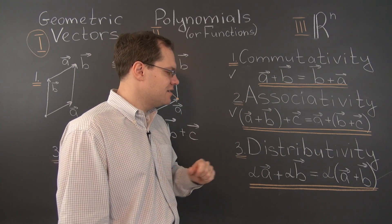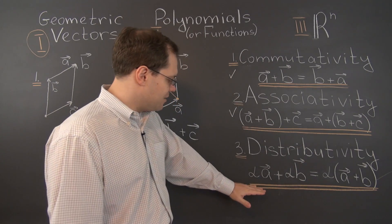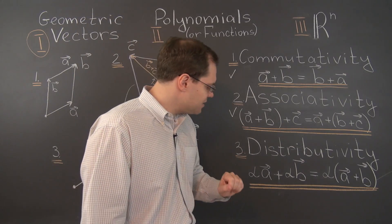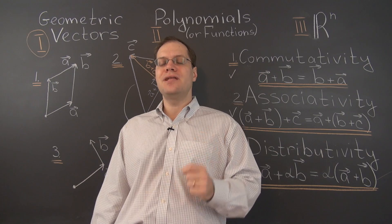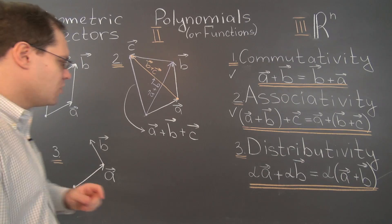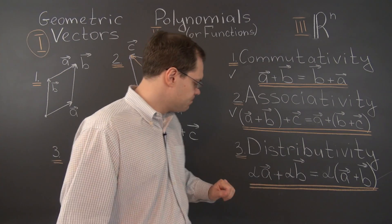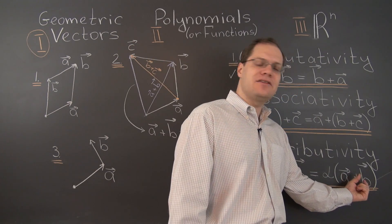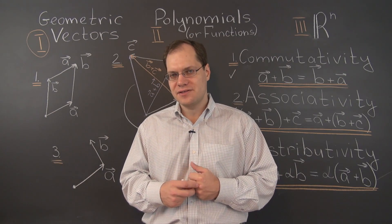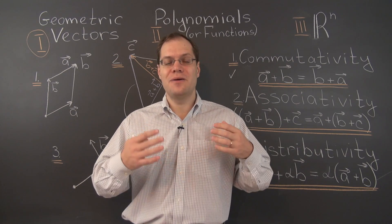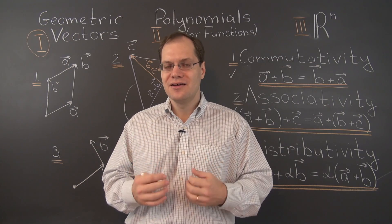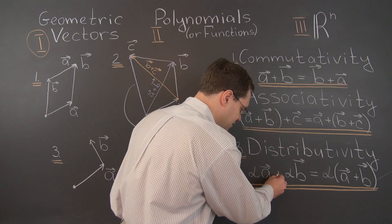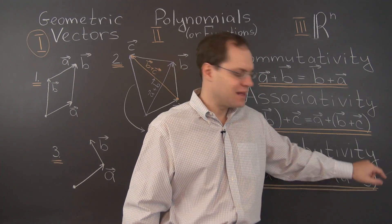So that's commutativity and associativity. Now let's talk about distributivity, which is less fundamental, but without distributivity there is no linear algebra. Distributivity says that if you have two vectors A and B and some number alpha — we'll use three halves — multiplying each vector by the same number and then adding them together gives the same result as adding the vectors first and then multiplying the sum by three halves. It's again about the order of operations not mattering.